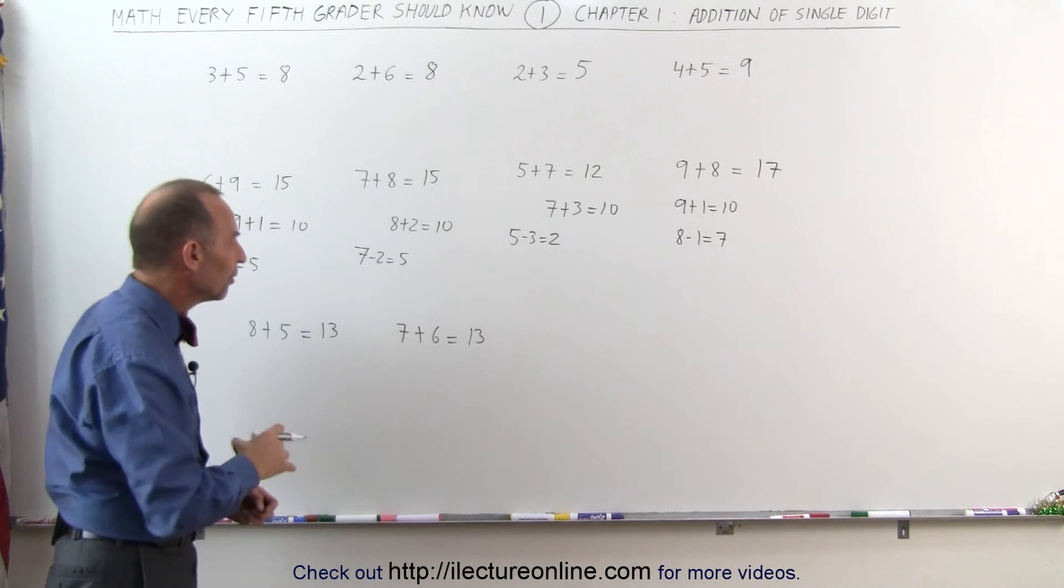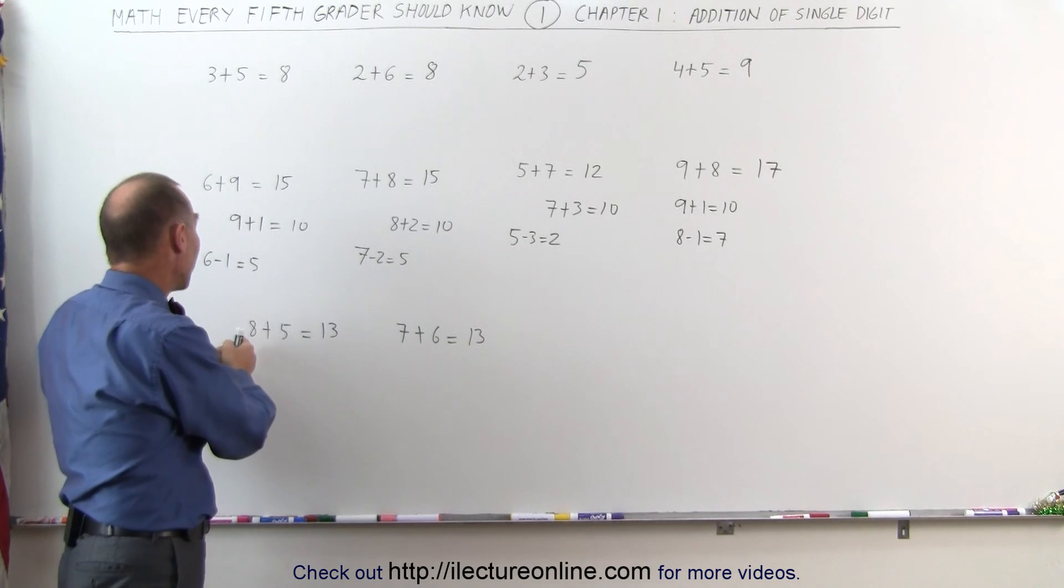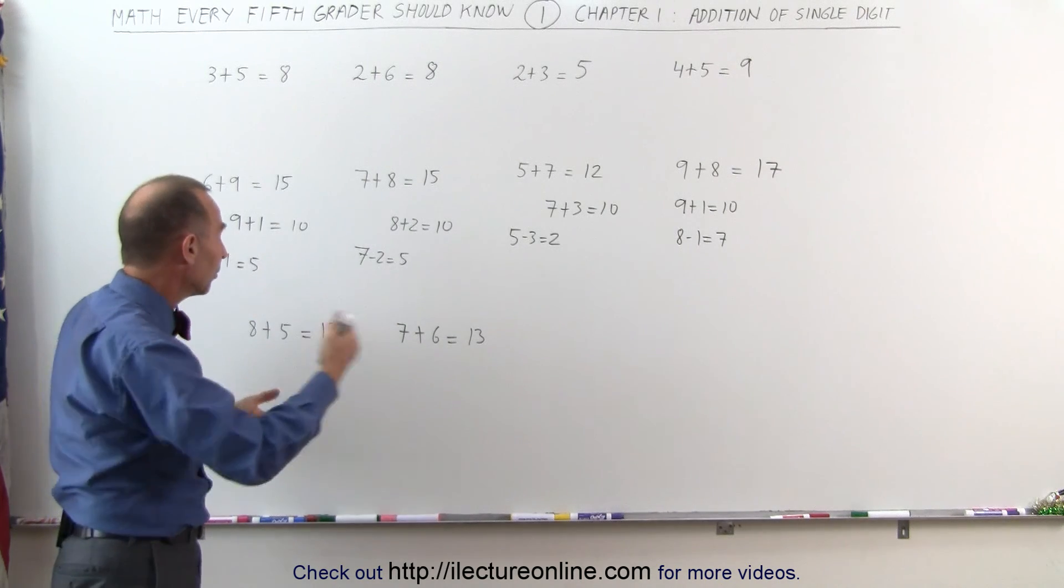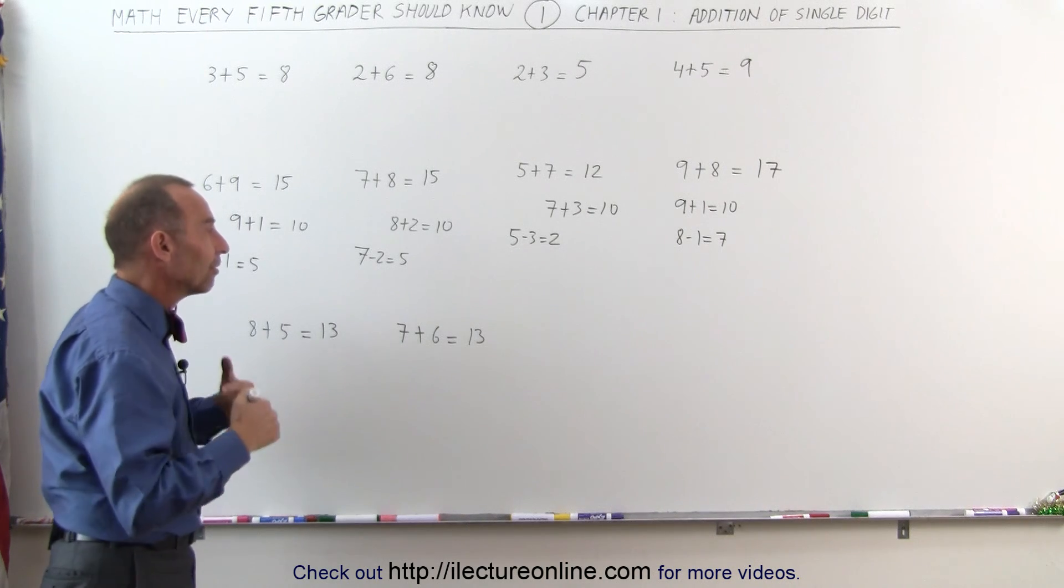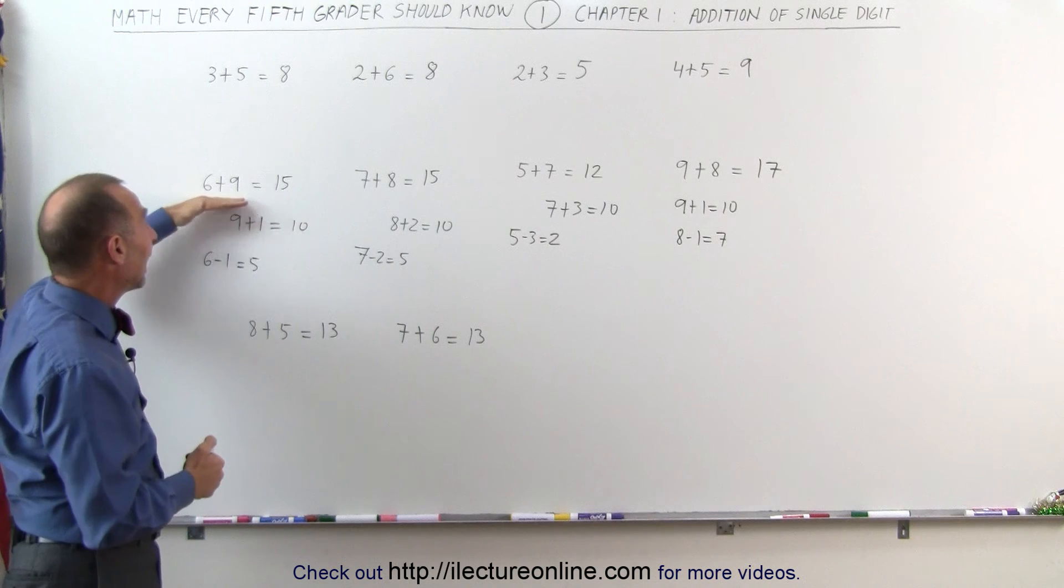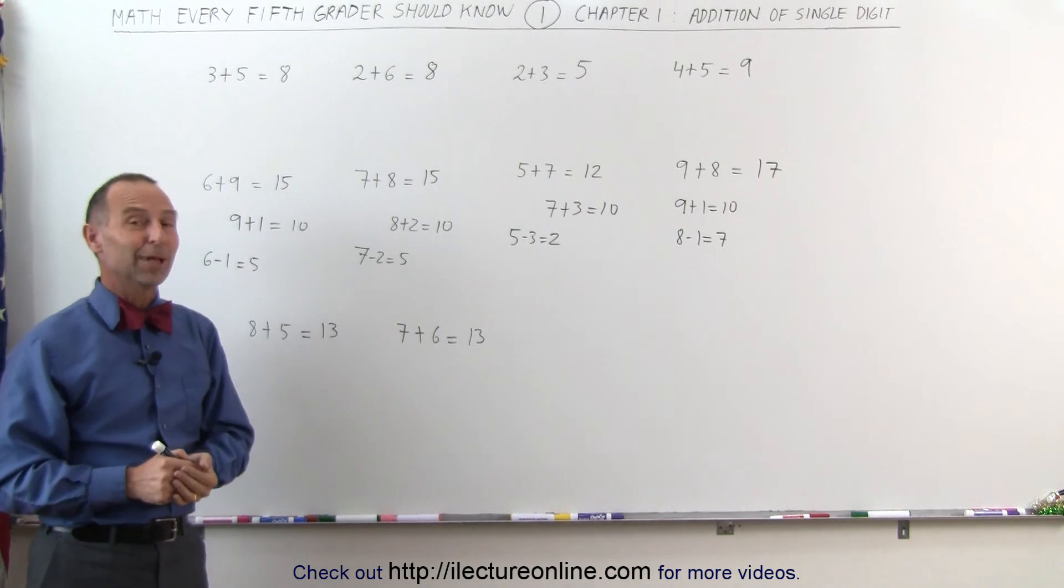And slowly but surely, we start feeling comfortable by looking at those 2 numbers, realizing how many more I need to get to 10, I subtract it from the smaller number, and then add 10 plus what's left from the smaller number to give me the total number. And that's the way we can very easily look at 2 numbers that are single digit and come up with the sum. And that's how we do that.